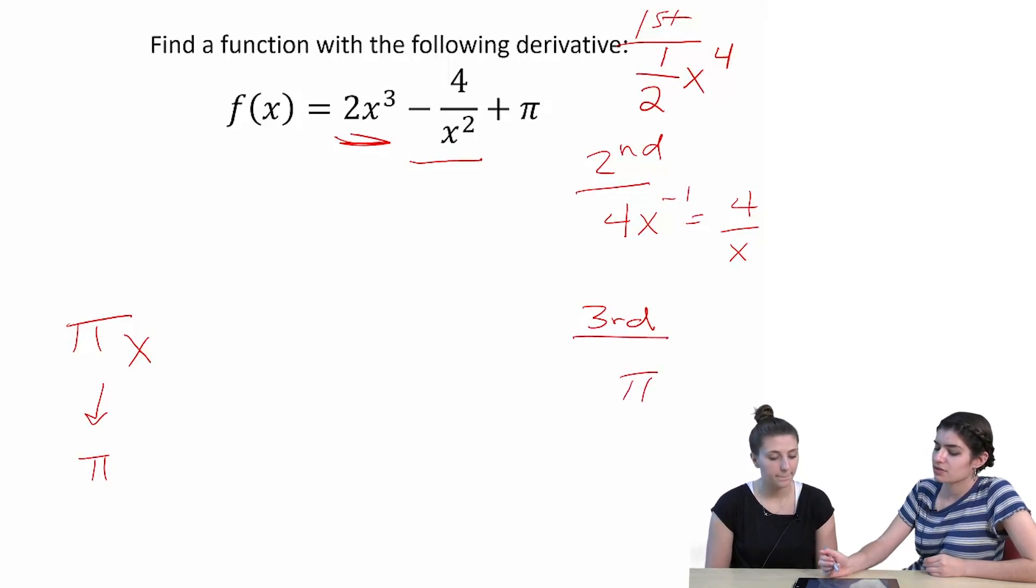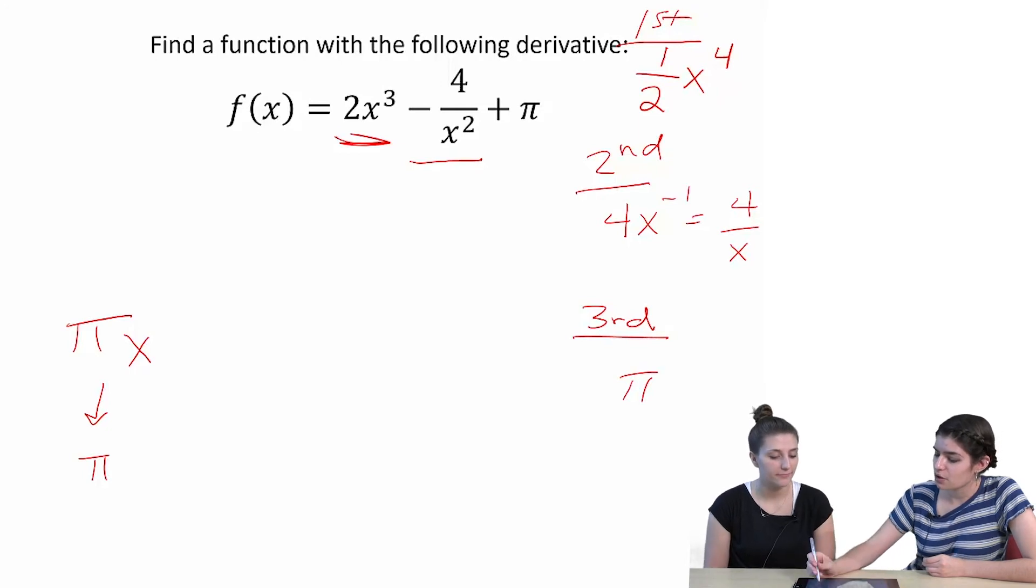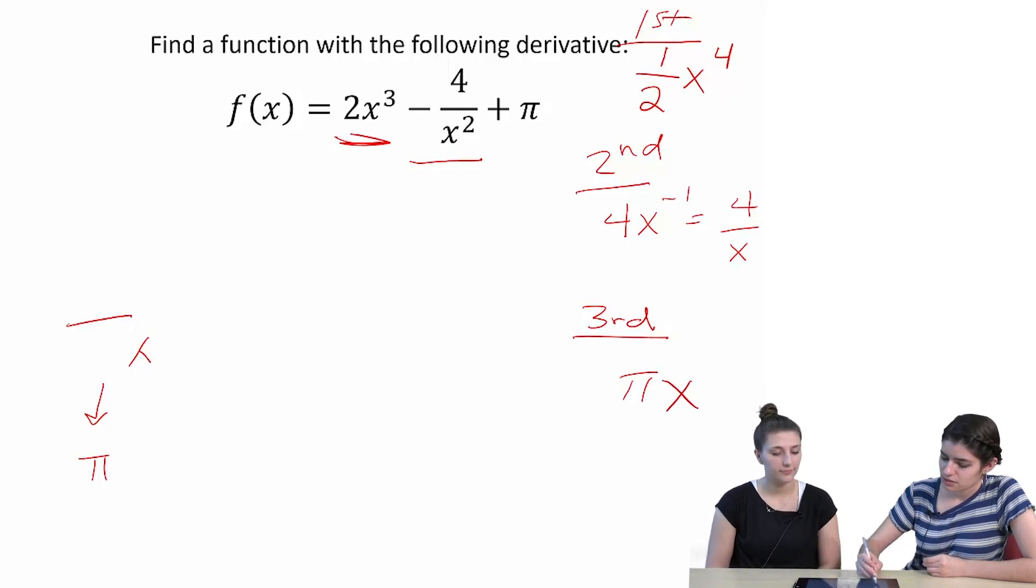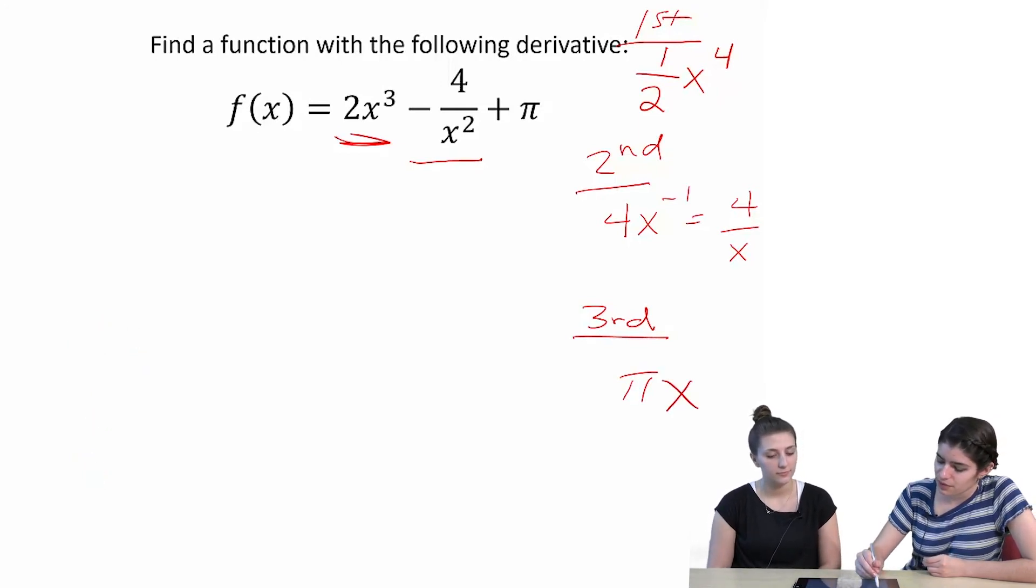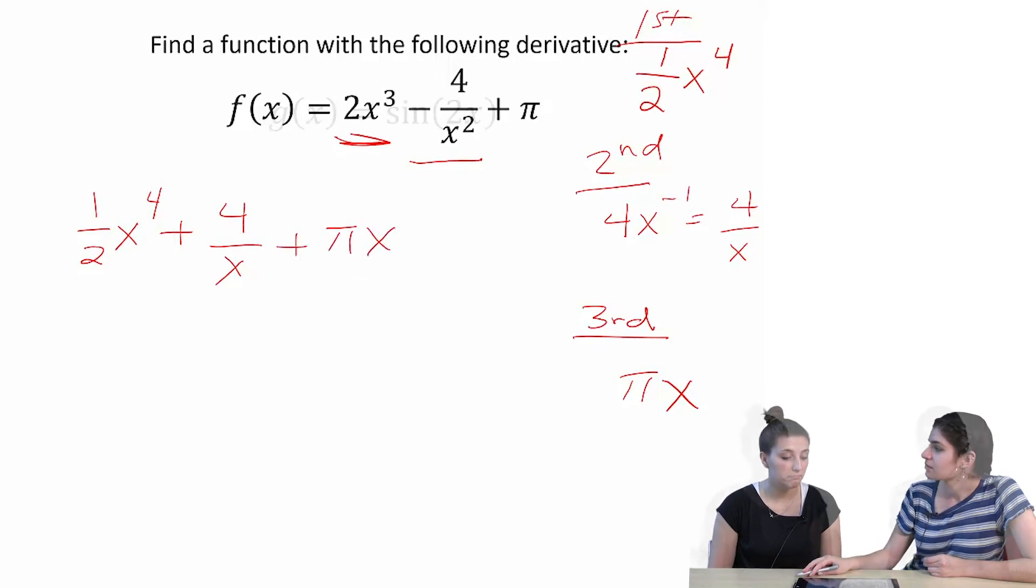We just added to the exponent. This one just doesn't have an x. Well we predict the derivative of that. We get pi. Which is what we want. Okay. That works. So our original equation. Oh pi x. There we go.